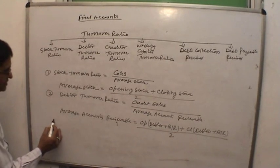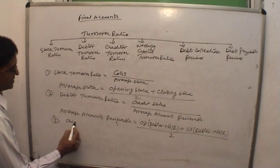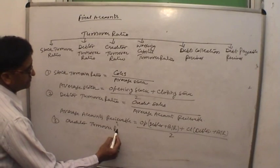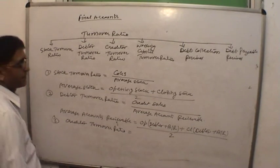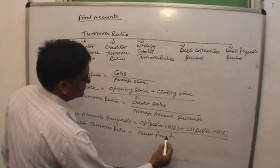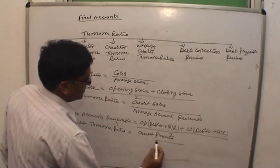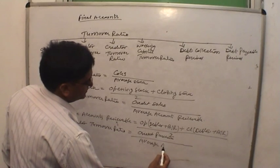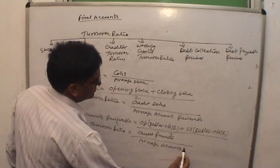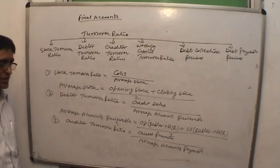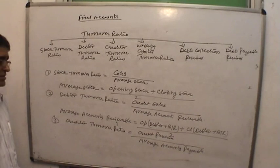Creditor turnover ratio equals credit purchases divided by average accounts payable. Average accounts payable can be calculated in the same way as average accounts receivable.